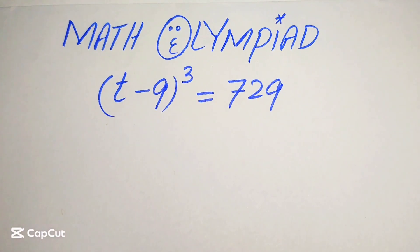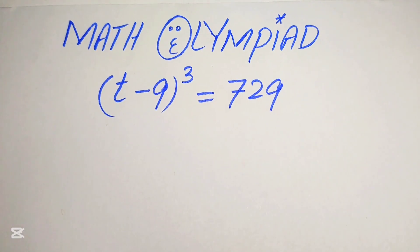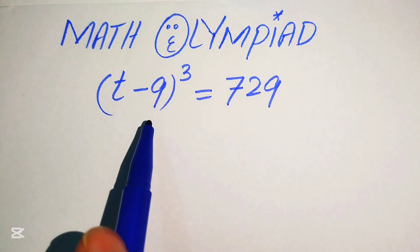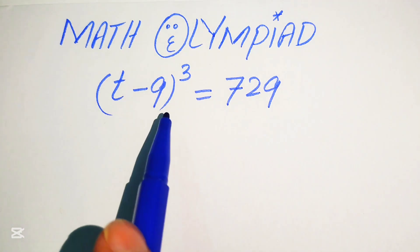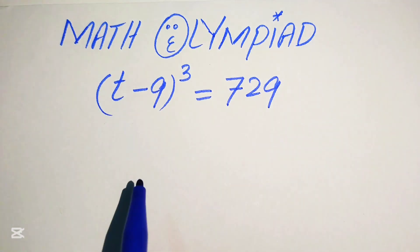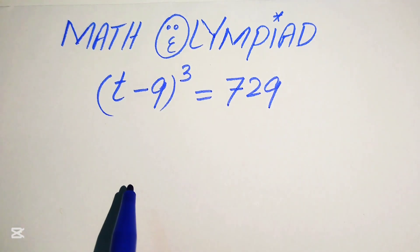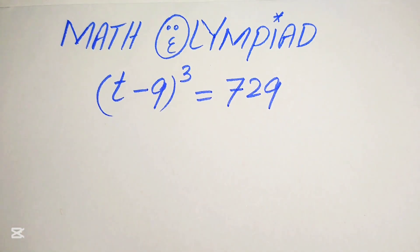Hello everyone, welcome to solve this nice math algebra problem. Here we have (t - 9)³ = 729 and we solve this problem for the values of t.